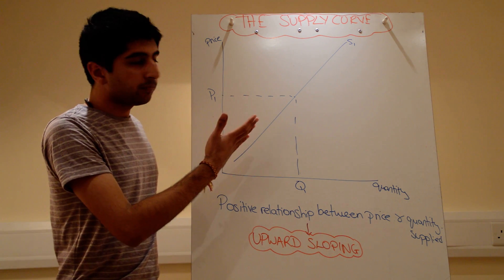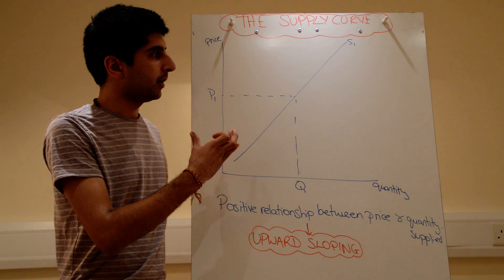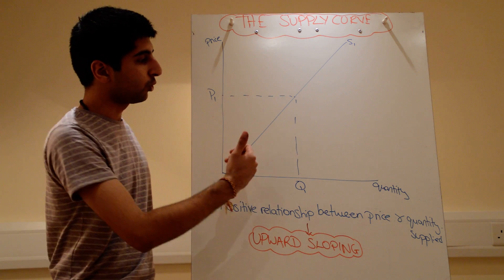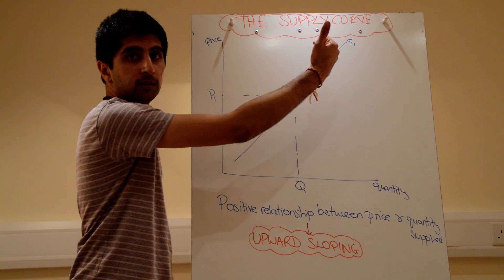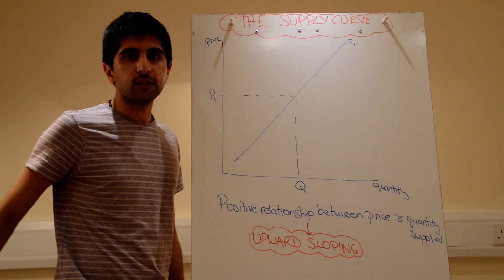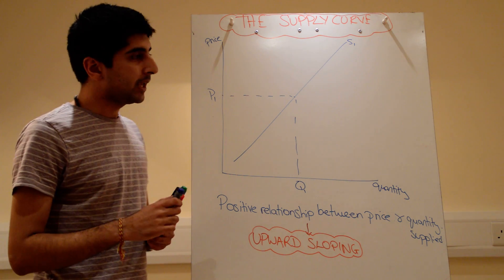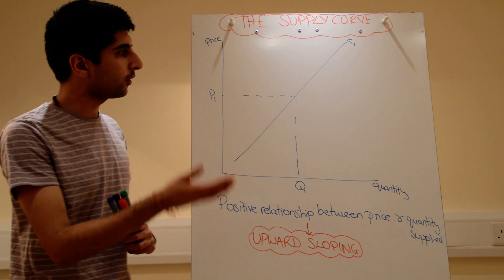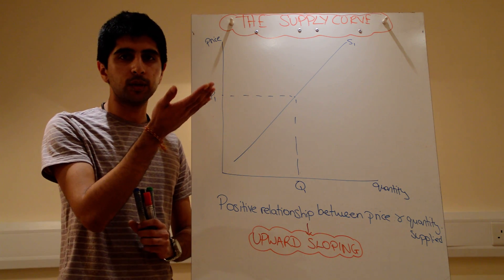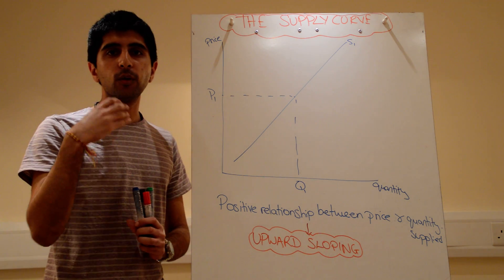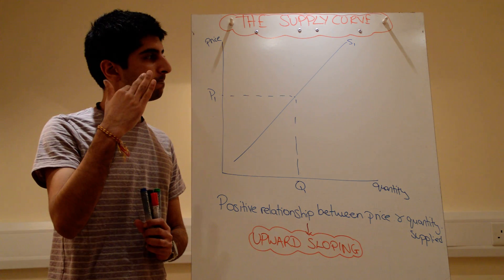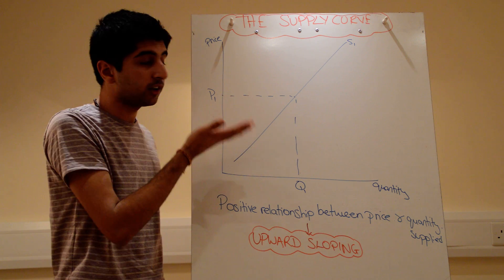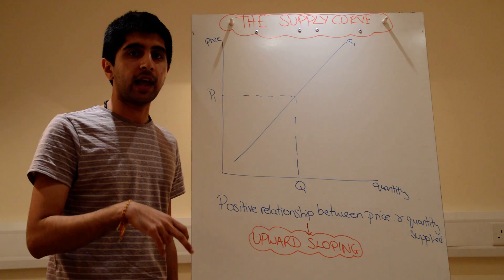There is a positive relationship between price and quantity supplied. For that reason, we draw the supply curve upward sloping — whereas demand was downward sloping, supply is upward sloping. The law of supply tells us why. When the price is higher, suppliers are more willing to supply; quantity supplied goes up. When the price is lower, quantity supplied goes down.